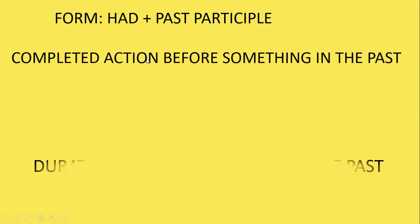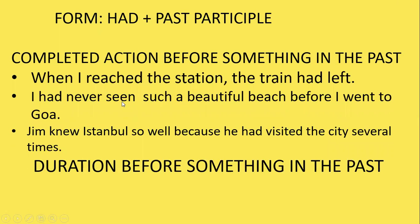To talk about a completed action before something in the past: 'When I reached the station, the train had left.' 'I had never seen such a beautiful beach before I went to Goa.' 'Jim knew Stanville so well because he had visited the city several times.' The action which happened first uses past perfect tense, and the action which happened later uses simple past. Here, the train leaving the platform happened first, then he reached the station late.